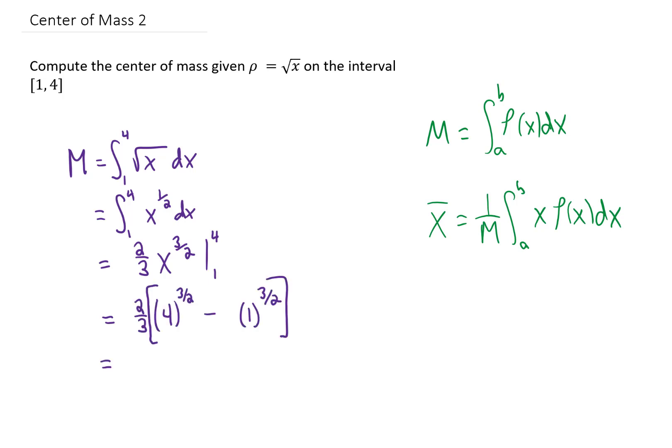We can do a bit of simplification so that we can get ourselves a number for the mass. A three-halves power means that we can take a square root and then cube, so 4 to the three-halves power is going to be 2 cubed, which is 8. 1 to the three-halves power is 1. 8 minus 1 is 7. Multiply that by two-thirds, and we get that our mass is 14-thirds. Now, those units might be kilograms.